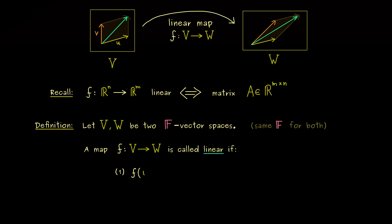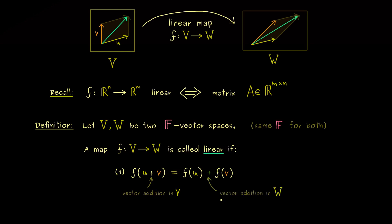Let's start with vector addition. We consider u plus v — in the picture this is the vector on the left — and on the right hand side this should also be a vector addition, namely f of u plus f of v. Note that we have different plus signs in the equation: the plus sign on the left denotes the vector addition in V, and the one on the right denotes the vector addition in W. A linear map translates the one vector addition into the other — this is what we mean by conserving the linear structure.